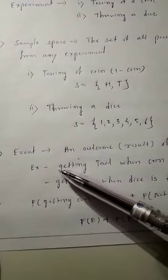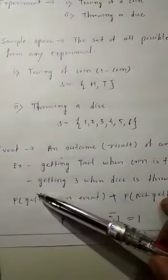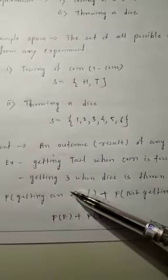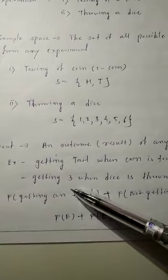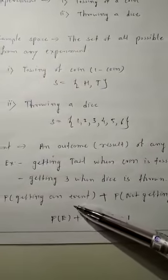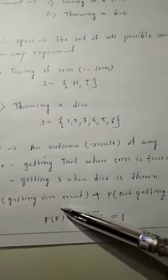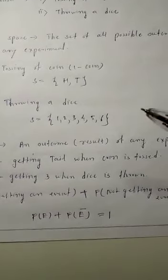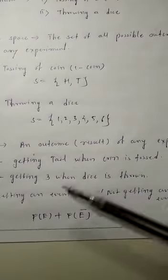The next term is event. Any outcome or result of any experiment is called an event. For example, getting a tail when the coin is tossed or when you throw the coin in the air. So if you get tail, that can be the event.